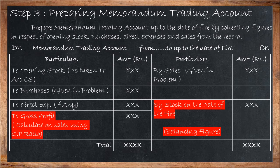Step 3: The memorandum trading account is prepared to find out the closing stock on the date of fire. On the debit side: opening stock, purchases given in the problem, and direct expenses if given. On the credit side: sales given in the problem, and gross profit calculated on sales using the GP ratio — that is, sales amount multiplied by GP ratio percentage. The balancing figure gives the stock on the date of fire. This account collects figures for opening stock, purchases, direct expenses, and sales for the period from the start up to the date of fire.